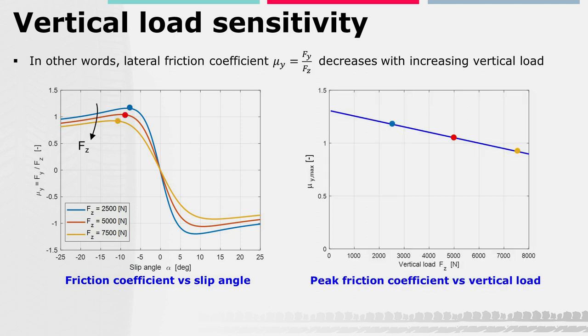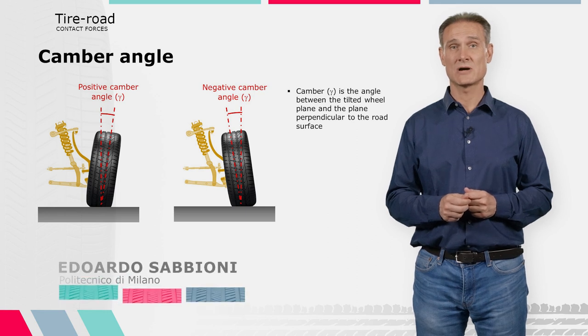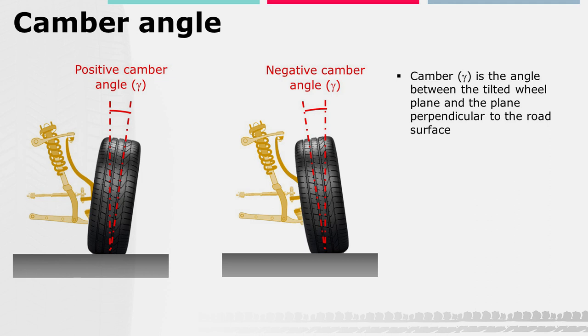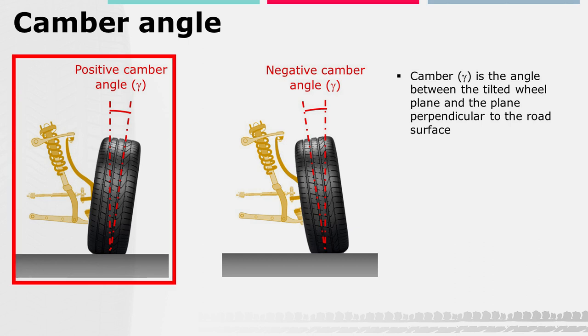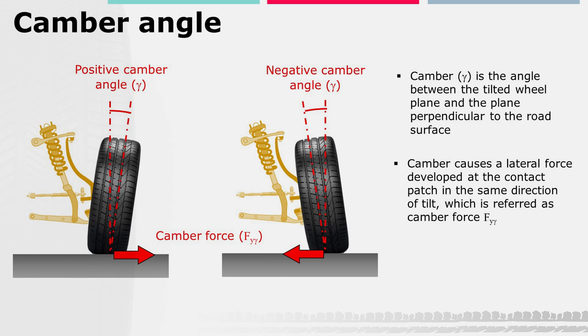It can be clearly seen that the lateral friction coefficient falls off as the load increases. In particular, a linear decreasing trend of the peak friction coefficient, or grip, with the vertical load is experimentally found for most tires, as shown in the figure on the right. A lateral force is induced not only by slip angle, but also by camber angle. The camber angle γ is the inclination of the tilted wheel plane with respect to the perpendicular to the road surface. Camber is positive if the tire leans outward at the top relative to the vehicle, or negative if it leans inward.